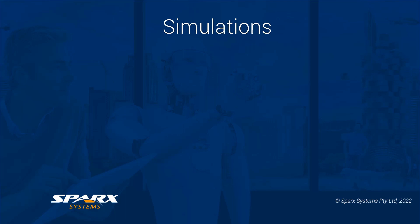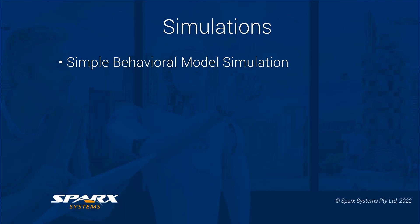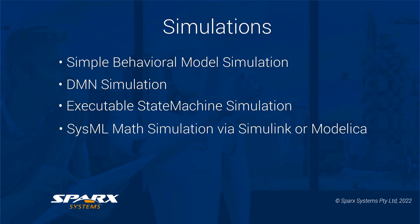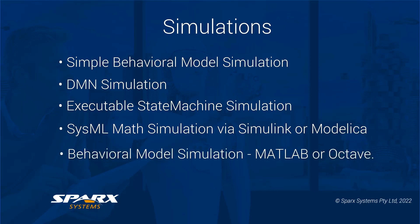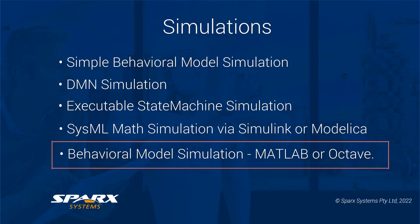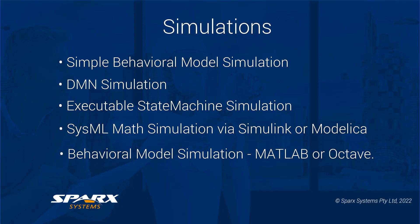Although simulation is only one of many machine interpretations of MBSE models, this is a key feature. There is a broad variety of options for simulation using Enterprise Architect, including simple behavioural model simulation, DMN simulation, executable state machine simulation, SysML mathematical simulation via MATLAB Simulink or Modelica, and behavioural model simulation using MATLAB or Octave calls. The first three can be applicable to MBSE, but examples of these are covered in other webinars. The ones more specific to MBSE are SysML mathematical simulation via MATLAB Simulink or Modelica, and behavioural model solver simulation using MATLAB or Octave calls.